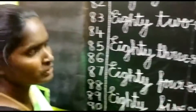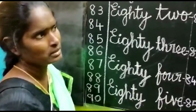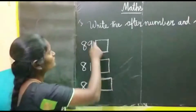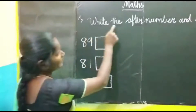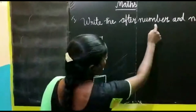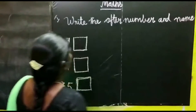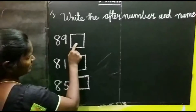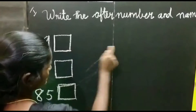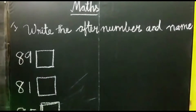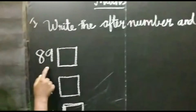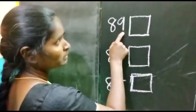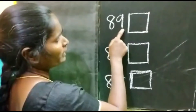Okay children, now I am going to teach exercise. First exercise: write the after number and name. Say the after number. 89 after number.